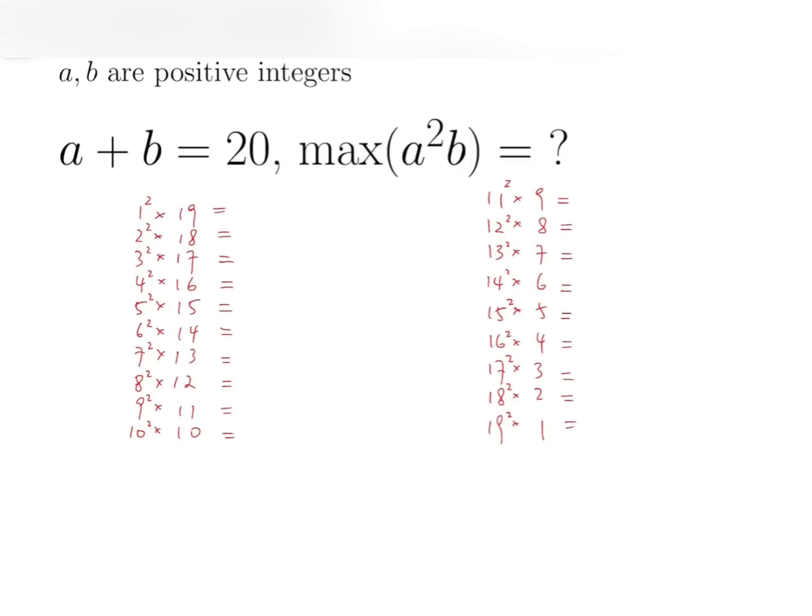Here are all the possible values of a and b. For example, when a is 4, then b will be 16. If a is 7, then b is 13, and so on. So here are 19 possibilities. I'm going to calculate all these products, starting from 1 squared times 19, which is 19. 2 squared times 18 is 4 times 18, which is 72.